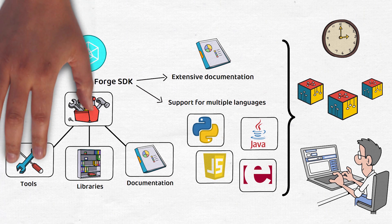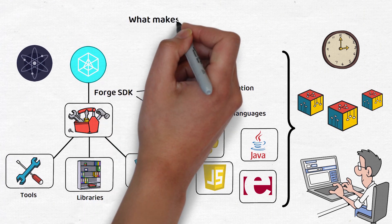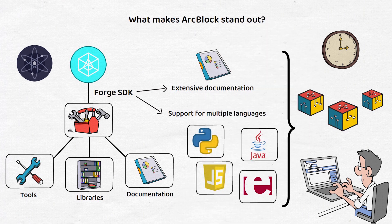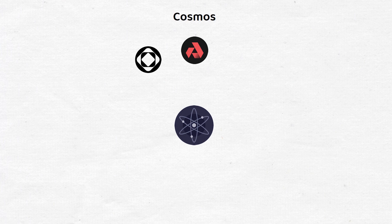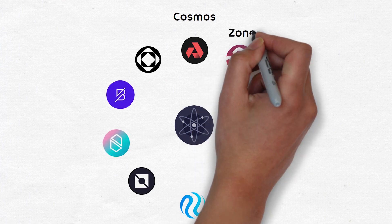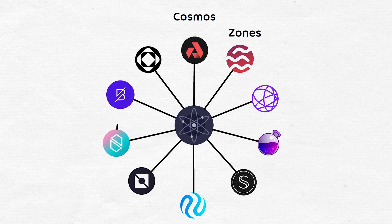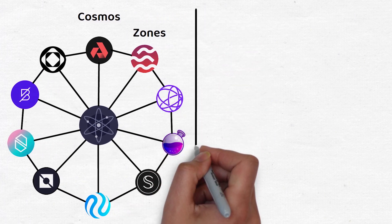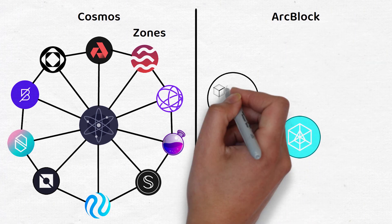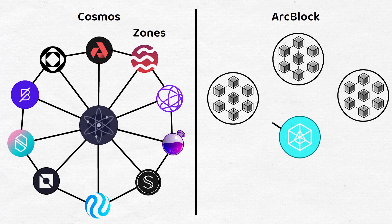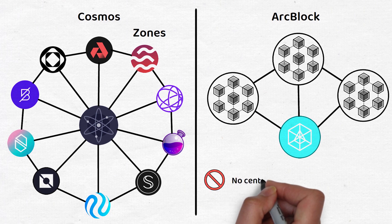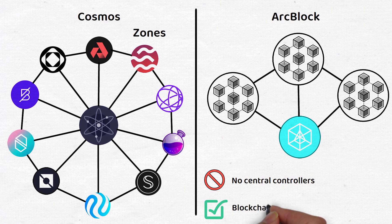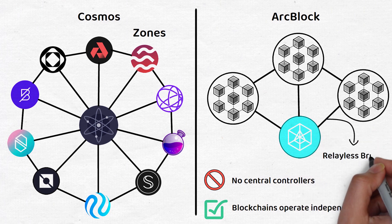So far this sounds a bit like Cosmos, so what exactly makes ArcBlock stand out? To answer that, I need to quickly explain how Cosmos works. All blockchains created through the Cosmos Hub, known as Zones, all communicate through the central hub, which allows them to effectively communicate with every independent blockchain on the Cosmos network without having to leave the network itself. ArcBlock, on the other hand, extends on the model of Cosmos to allow for business logic to be processed through interoperability. However, there are no central controllers, and each blockchain operates independently of the others, while being able to interact with other blockchains through ArcBlock's network.